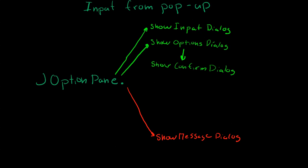All right, so in the next couple of videos we'll be getting input from pop-ups, and using JOptionPane we can get output. It gives us a bunch of different options for getting input.